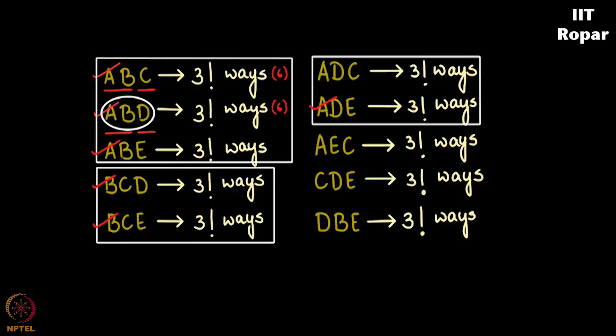As you can see A, B, C, A, B, D, A, B, E, B, C, D, B, C, E, A, D, C, A, D, E, A, E, C, C, D, E, and D, E, B are all the possible ways in which three people can step forward.